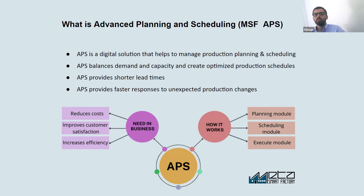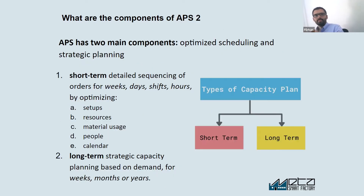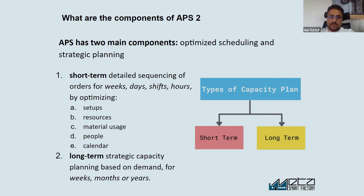APS optimizes the plan to give a better solution. It enables planners to create a detailed production schedule, to allocate work orders to resources, to track progress against targets, and it can help identify potential bottlenecks and manage risks that come from unexpected production changes, so that customer demands are met on time.